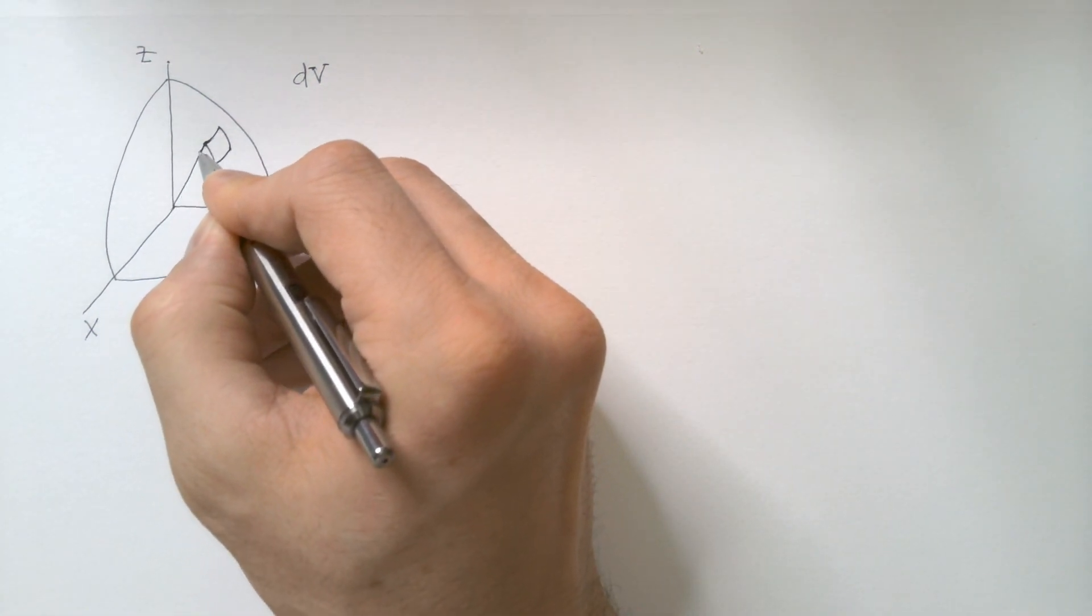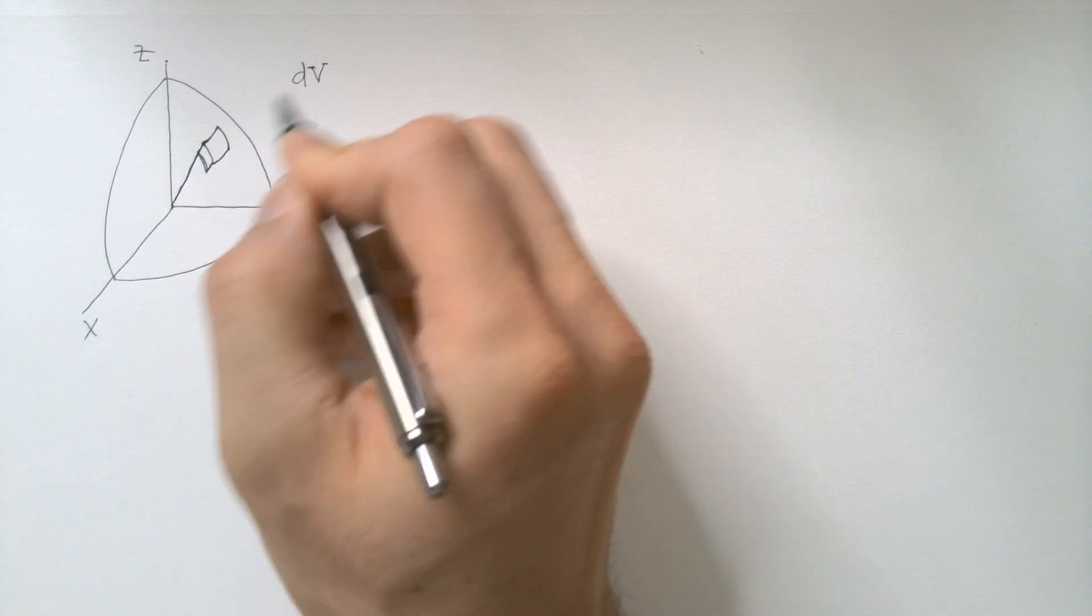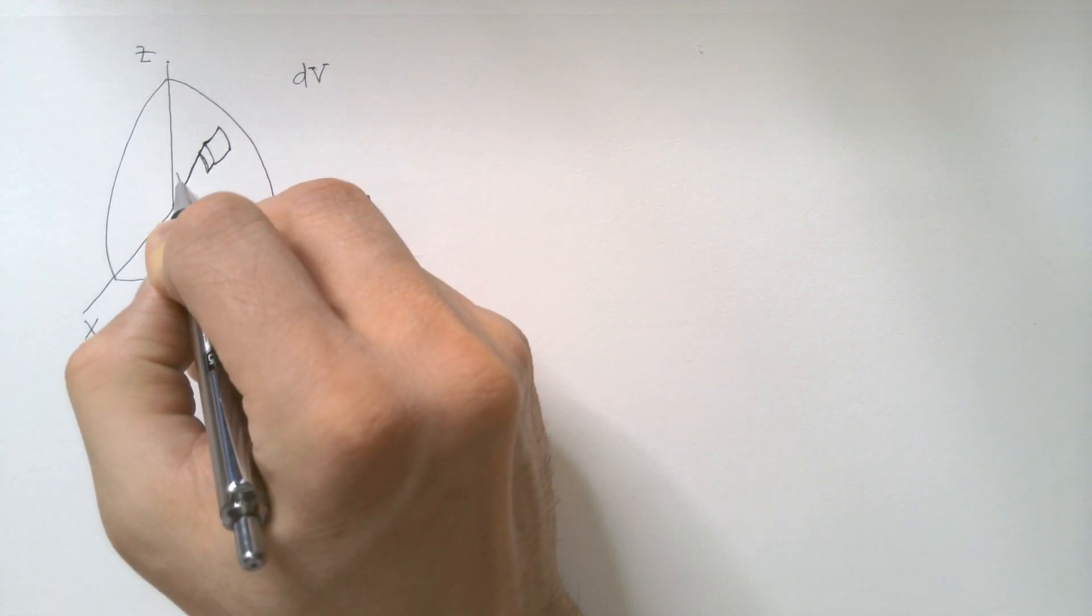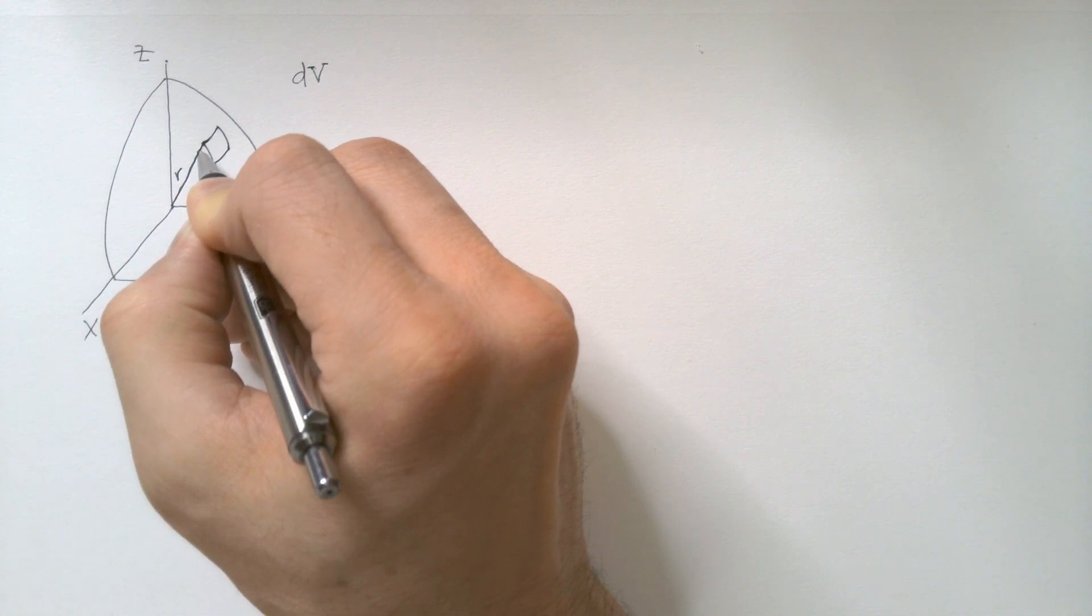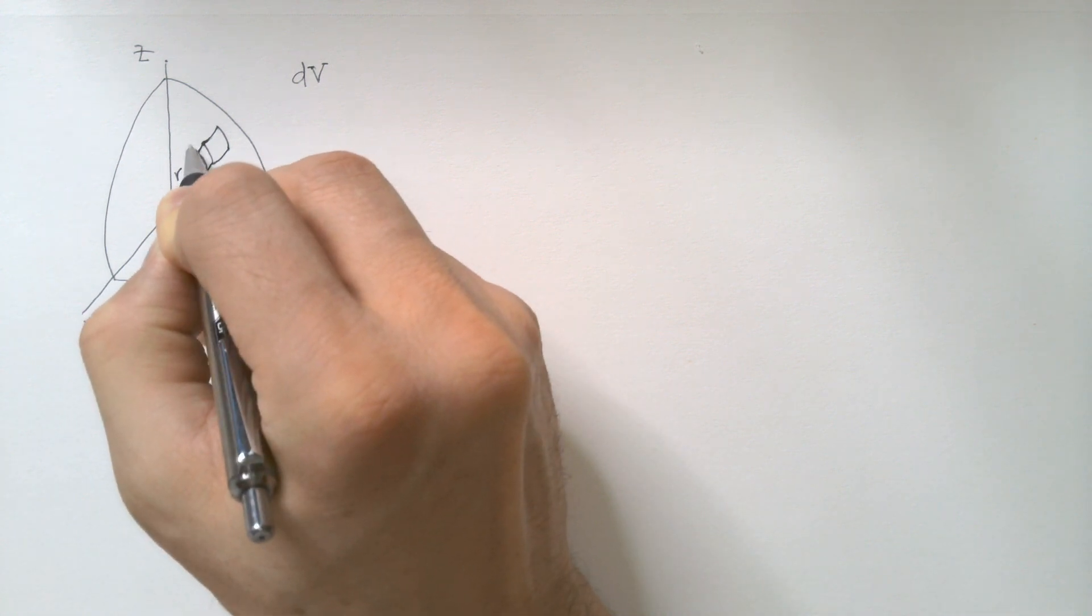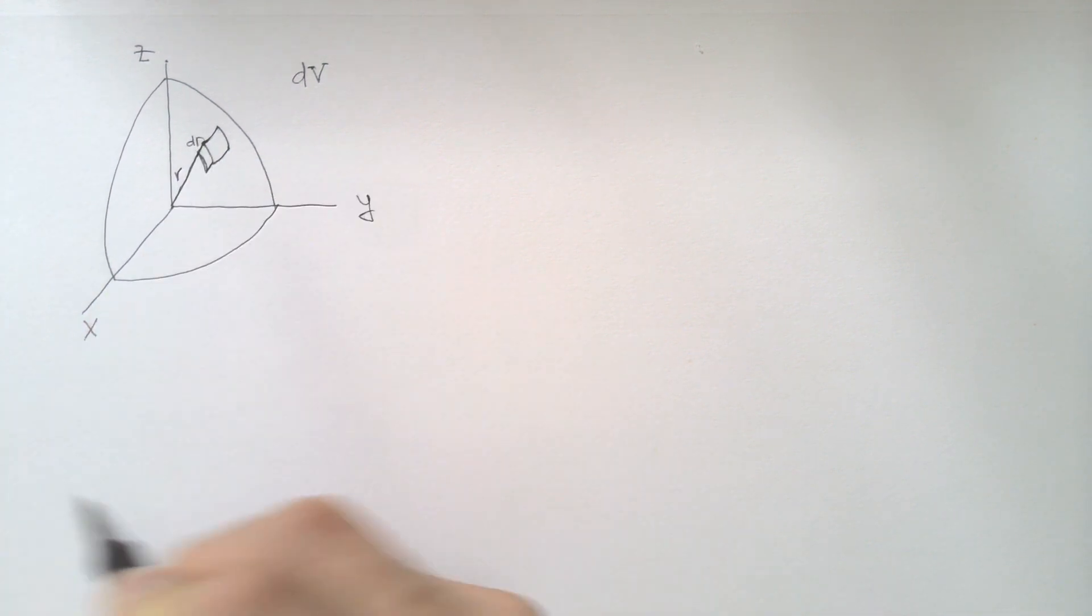Well, if this is the radius to this volume element dv, let's call it radius r, then this increment over here is dr.